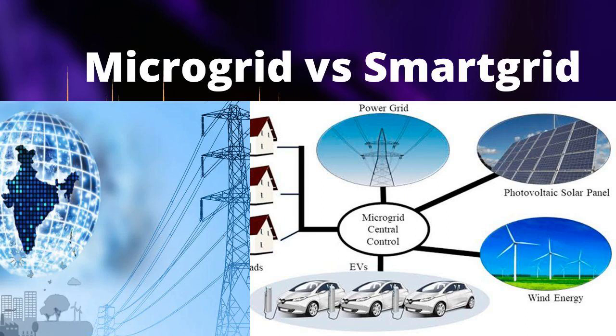Control and Automation. Microgrid: microgrids have a certain degree of control and automation, allowing them to operate independently or in conjunction with the main grid. They can respond to local conditions and optimize energy use. Smart Grid: smart grids heavily rely on automation and control systems to monitor grid performance, manage demand, and respond to fluctuations in real time. They use data analytics to make informed decisions and reduce energy wastage.